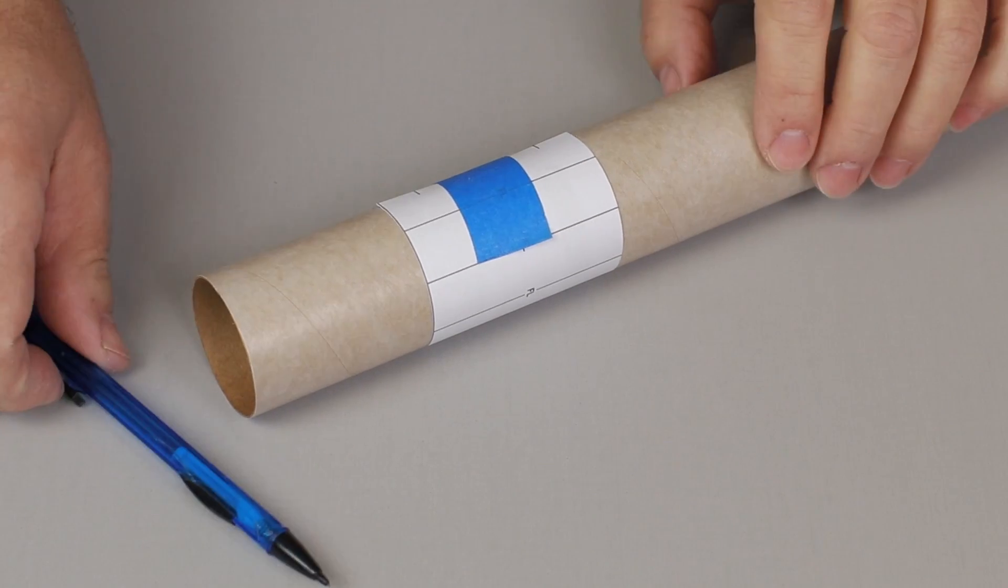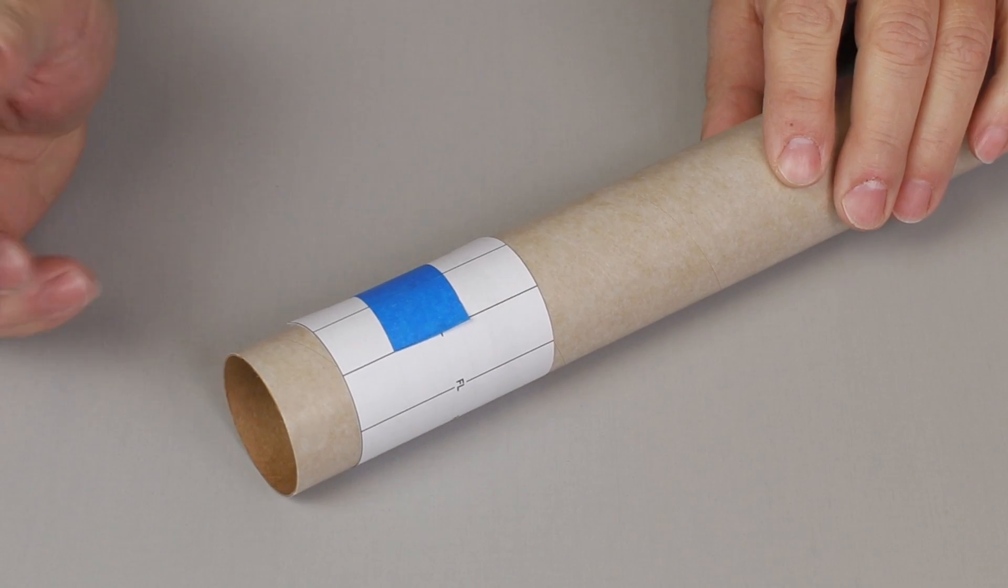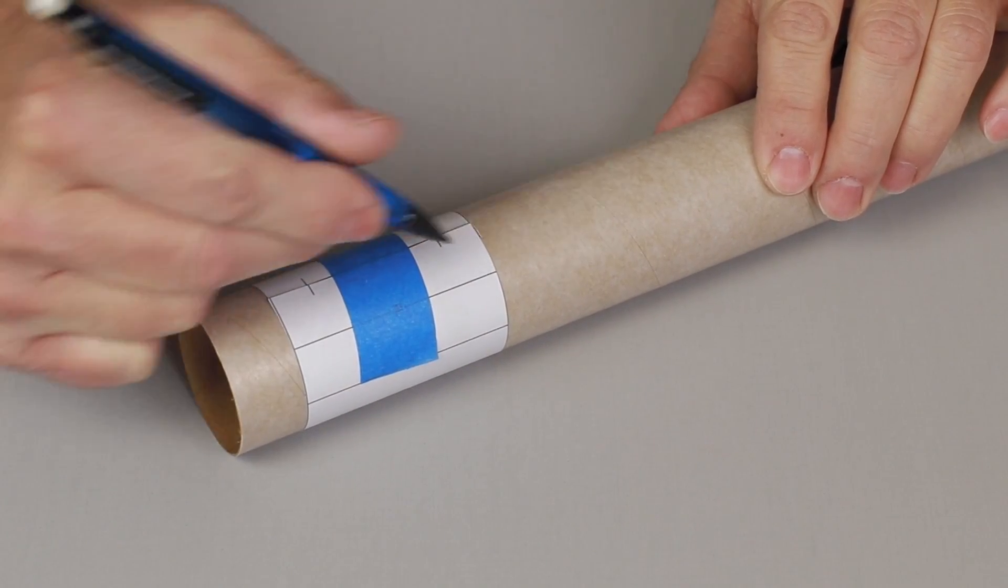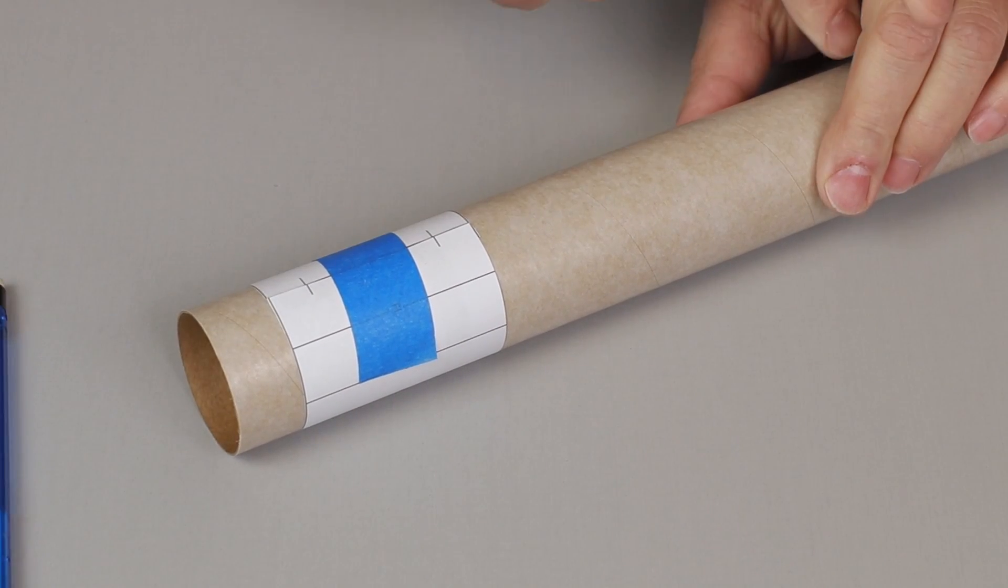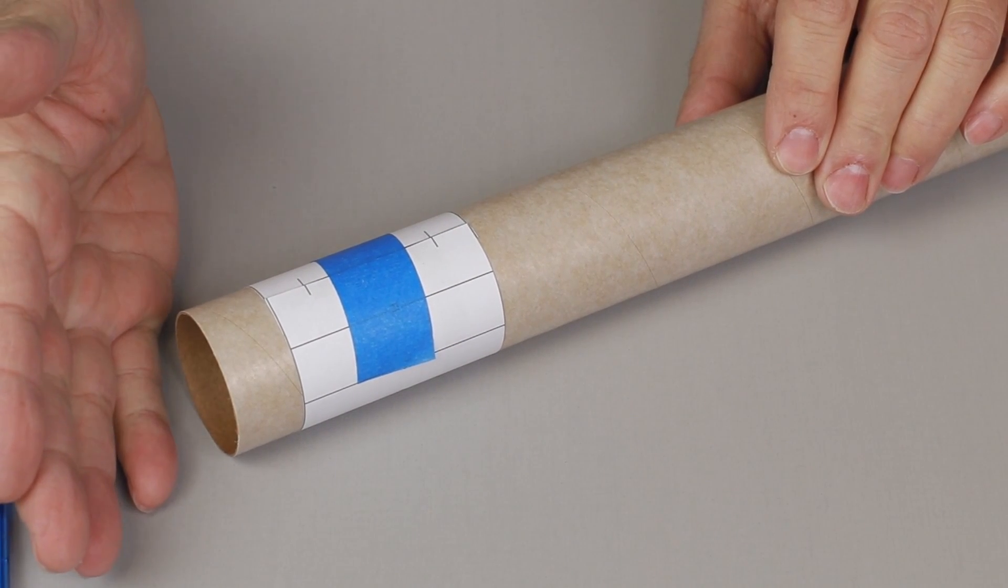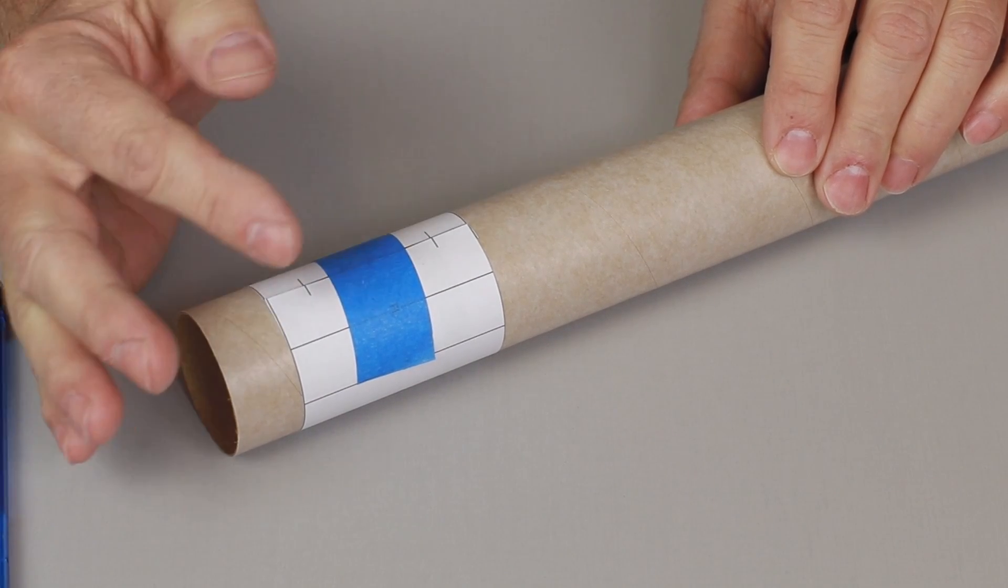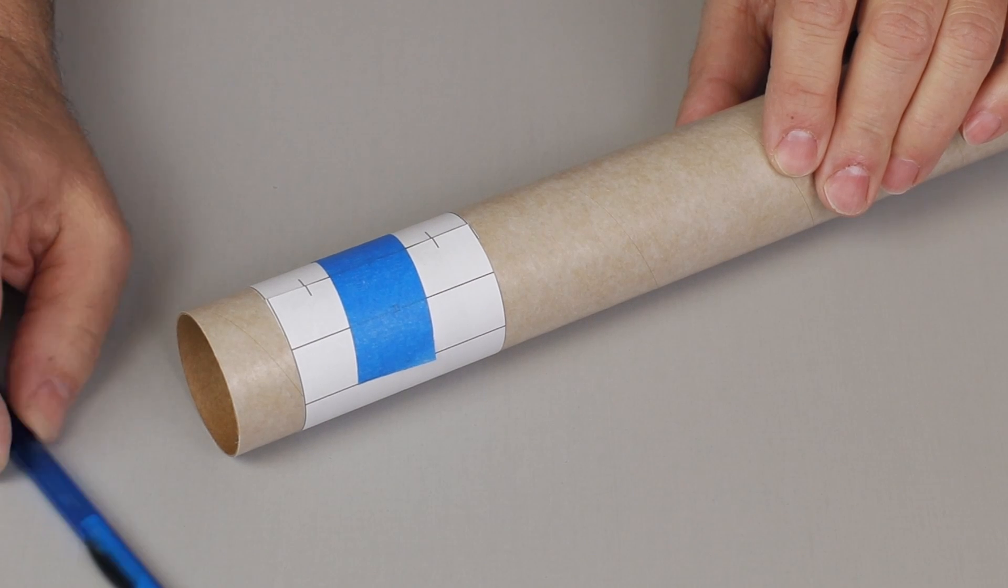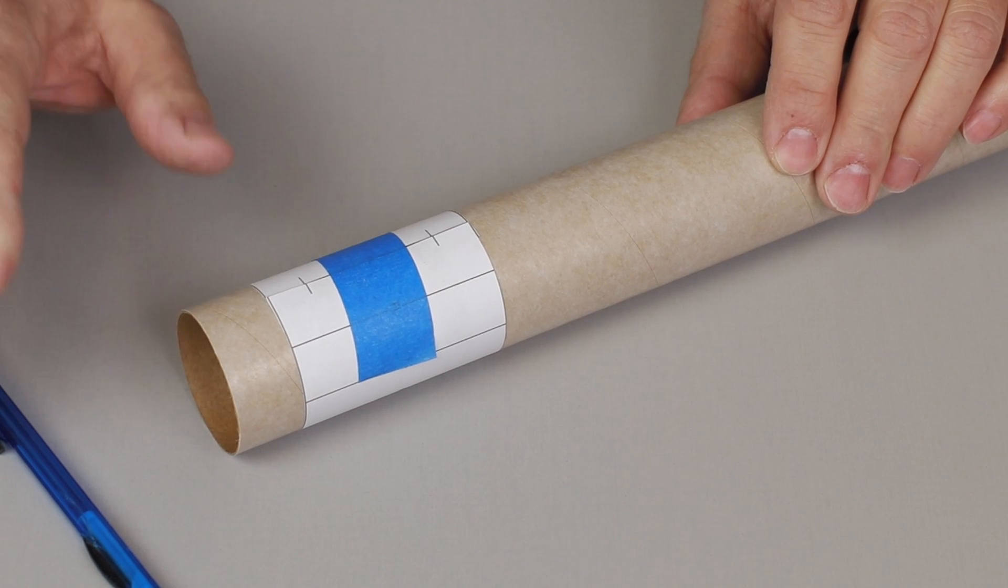The next step is to take the fin and alignment guide and tape it onto your tube and lightly make pencil marks at each indicator line here on both sides. After we do that, I'm going to take it to a door frame and strike a straight line on the tube. And that way we'll have an alignment guide to glue our fins on and our launch lugs and anything else that we need that needs to be straight. So just make sure it's a light line because later on we'll want to remove that or cover it with paint.